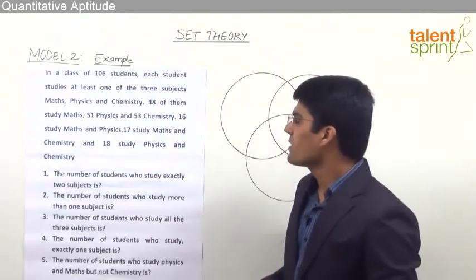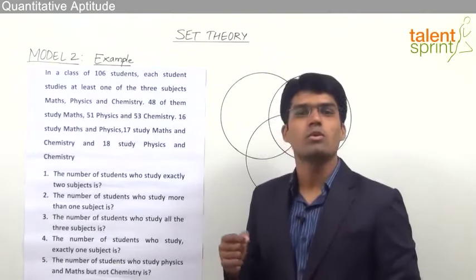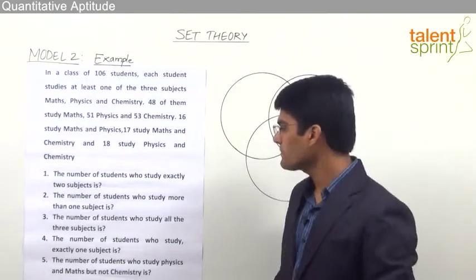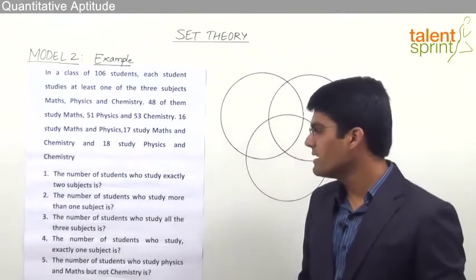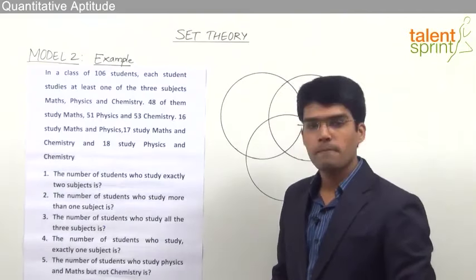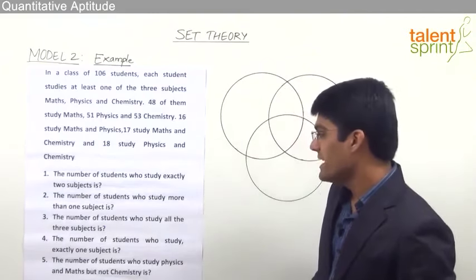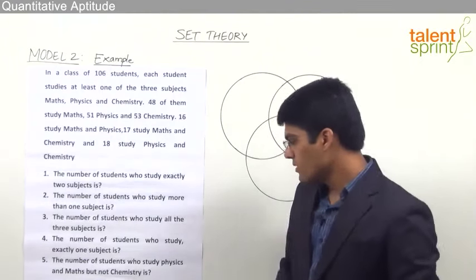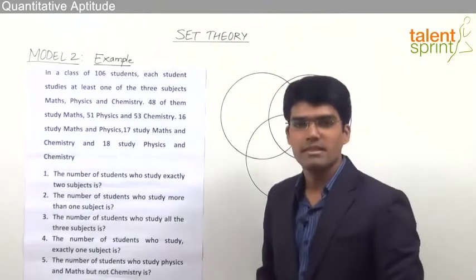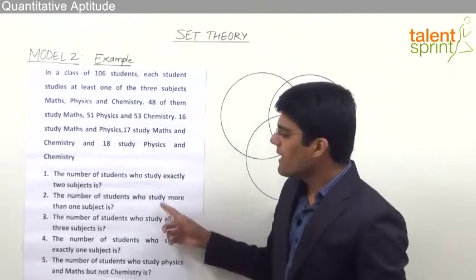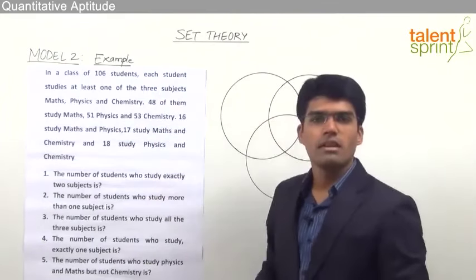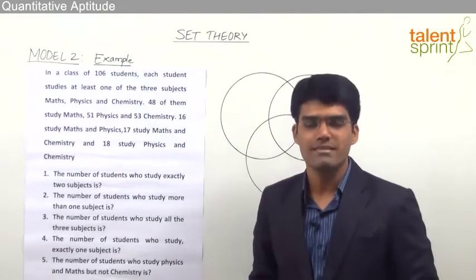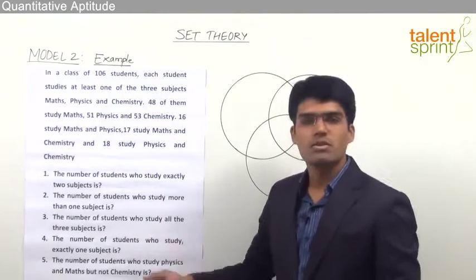The first question is: the number of students who study exactly two subjects. Second: the number of students who study more than one subject. Third: the number of students who study all three subjects. Fourth: the number of students who study exactly one subject. And the last one: the number of students who study Physics and Maths but not Chemistry. All 5 questions are based on the given information, so we must first draw the Venn Diagram, fill all its regions, and then solve each question.